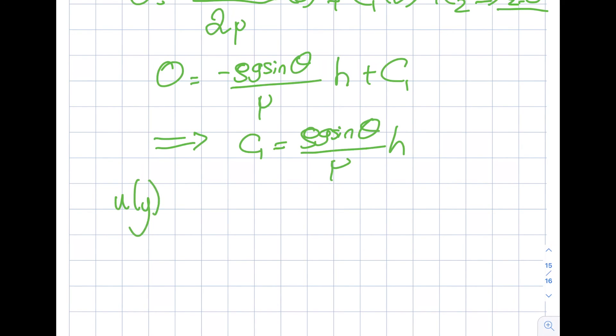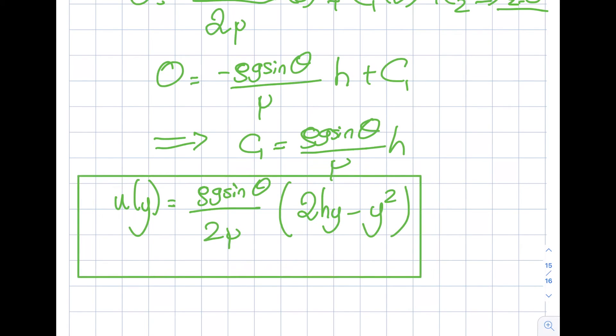u of y then will be rho g sine theta divided by 2 mu—I'm just taking in parentheses and saving some time for all of us—2hy minus y square. So now I can box this up and call it a day: 2hy minus y square.